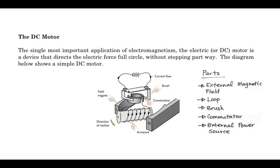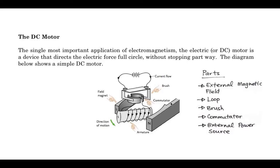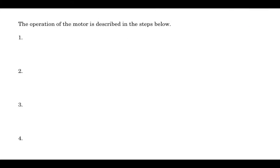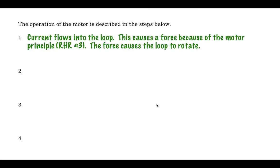But basically, it touches the brushes, and the whole commutator system spins like this. And we're going to go over the operation right now. So it's basically described in these steps. First of all, current flows into the loop. Into the coil in the middle, current flows in. And this causes a force because of the motor principle. And that force causes this loop to rotate.